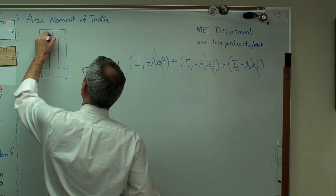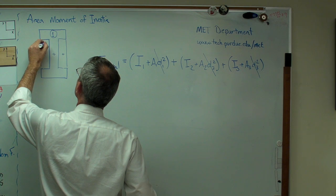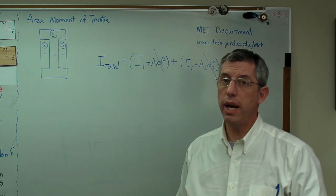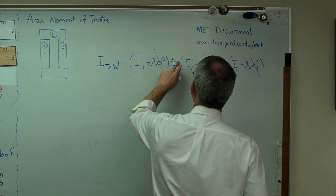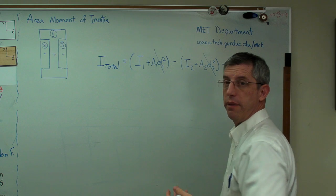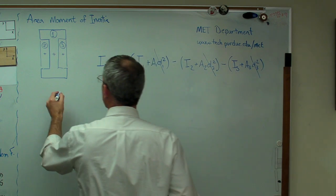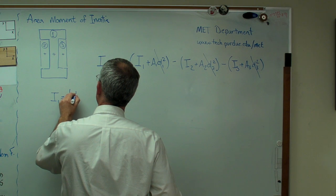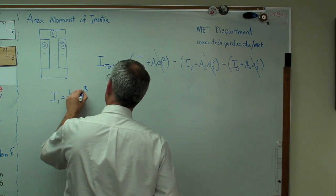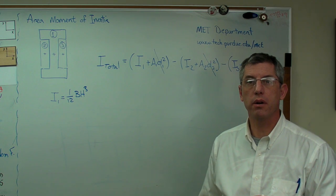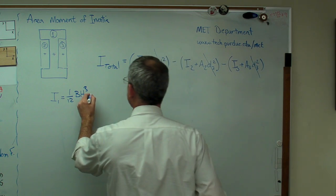I'll call that one, that two, and that three. Two and three are negative areas. I'm going to wind up subtracting these. Let's just go ahead and work through this. I1 is 1 over 12 base times height cubed. Since it's the overall, I'm going to use capital letters for this.